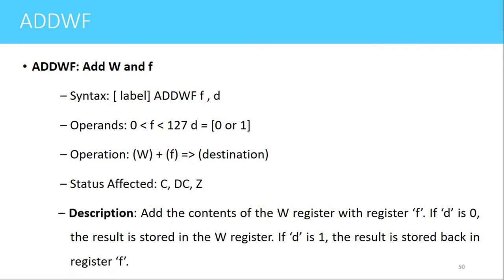The next instruction is ADDWF. The meaning of this instruction is to add the contents of the working register and the file register. The syntax of the instruction is ADDWF F, D. Here F is the file register — it can be any SFR or it can be the address of a RAM memory location. D stands for the destination bit. If this bit is 0, the result will be stored in the working register; if this bit is 1, the result will be stored in the file register.